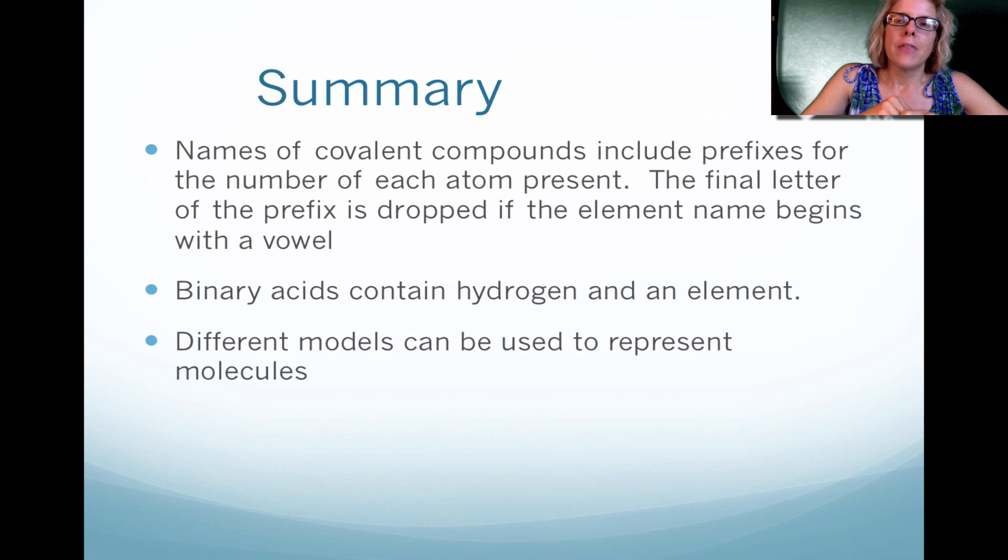Binary acids, they always contain hydrogen along with another element, and please remember hydro is the beginning of the name, and then the element with an IC ending. And then lastly, we're going to look at Lewis structures. We're going to count up valence electrons, figure out how many bonding pairs, and we'll put extra electrons that are left over on the central atom to satisfy the octet rule.